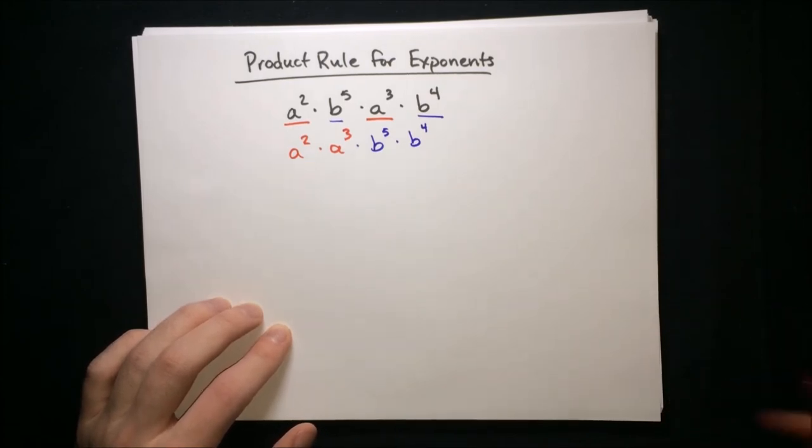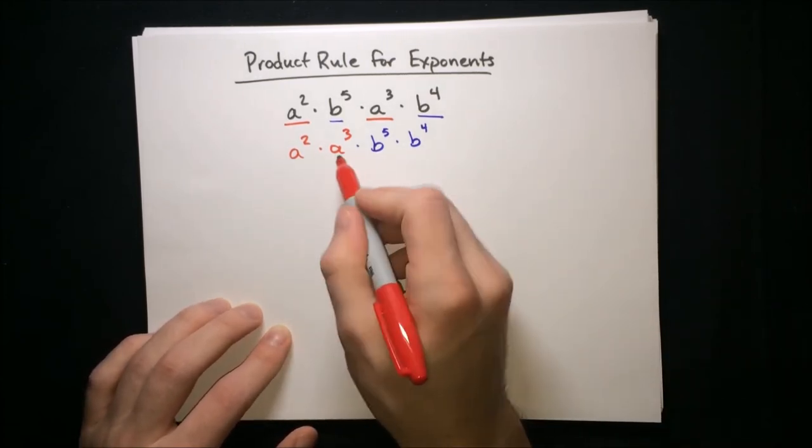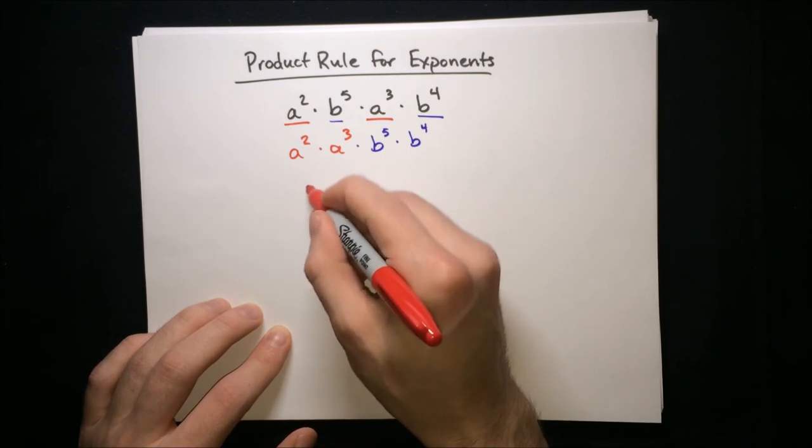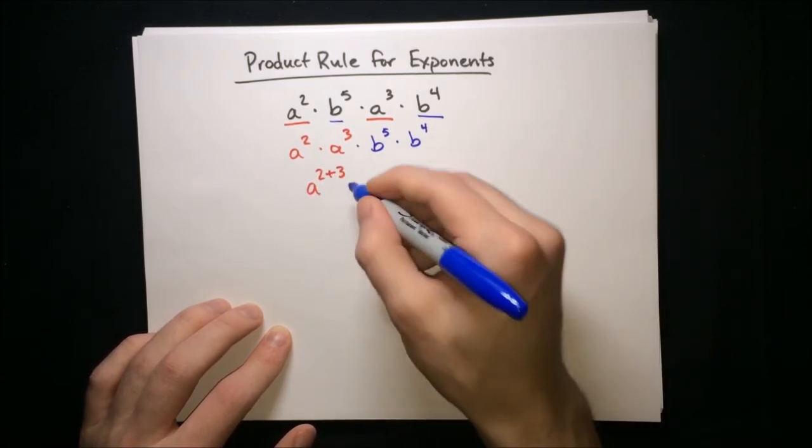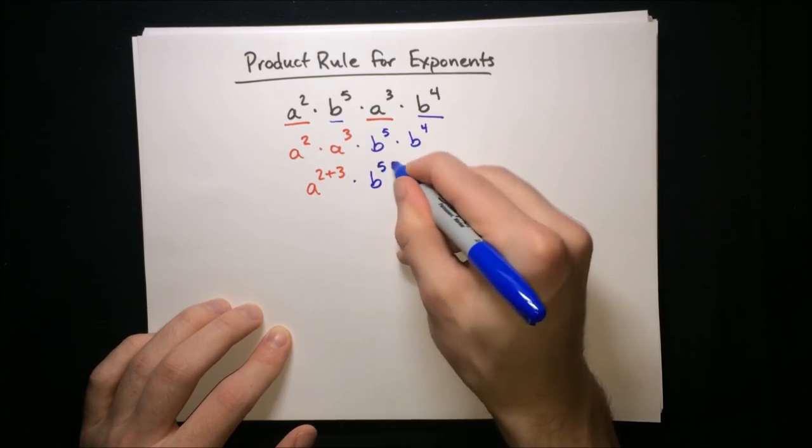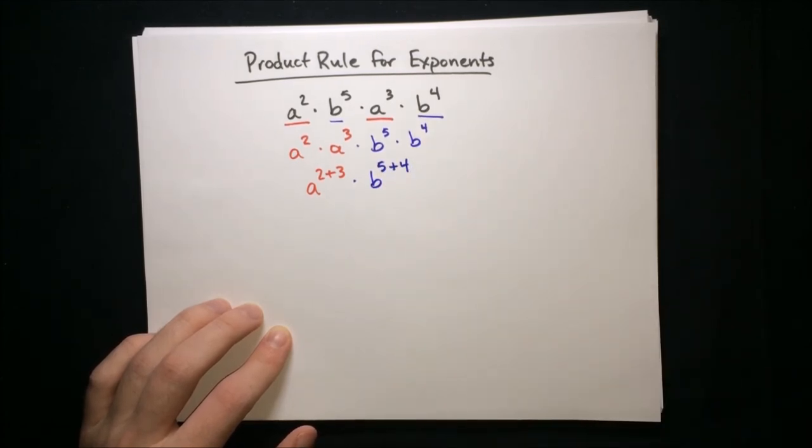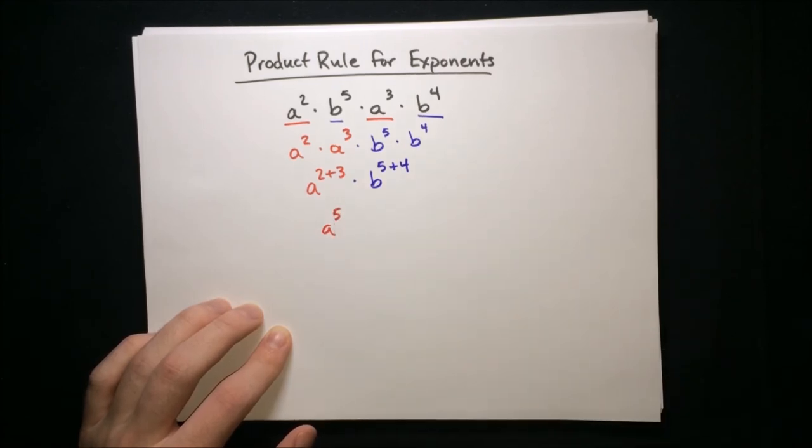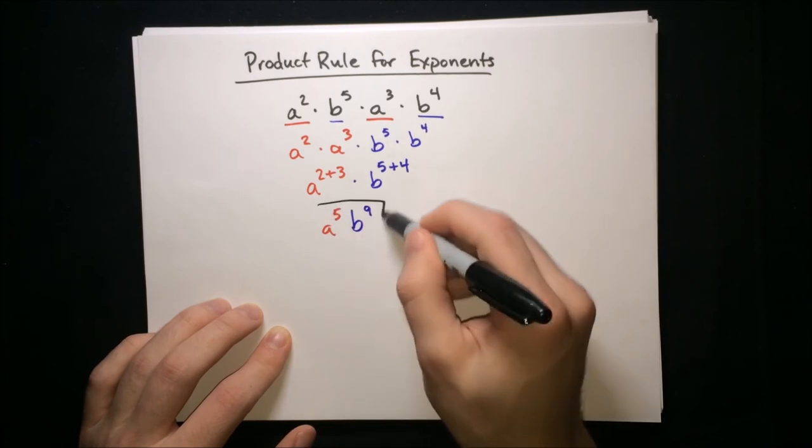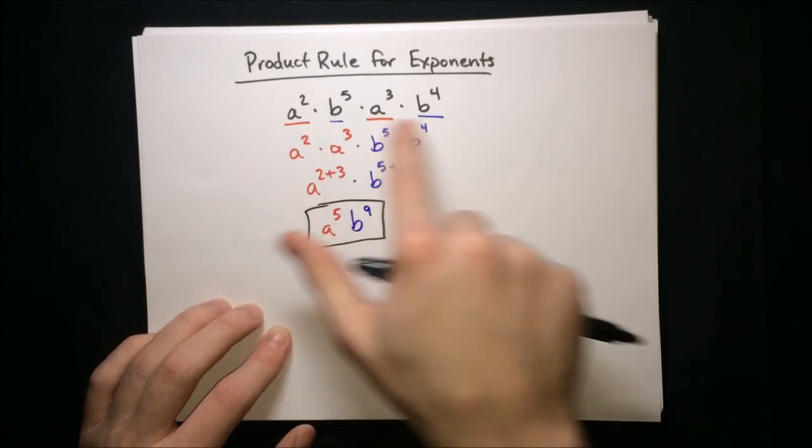And now we can go ahead and do that product rule for exponents, because we have the same base here, so that's a to the two plus three, and then b to the five plus four. And the result is a to the fifth times b to the ninth. And that's it. That's the simplified form of that product.